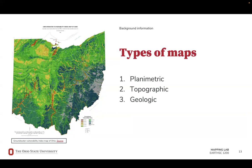For example, here we have a Groundwater Vulnerability Index map of Ohio, which depicts an area's vulnerability to groundwater contamination based upon its hydrogeologic, topographic, and soil characteristics. Systems of creating, managing, analyzing, and mapping data are known as geographic information systems, or GIS.